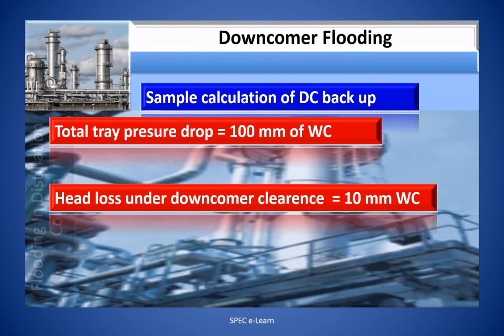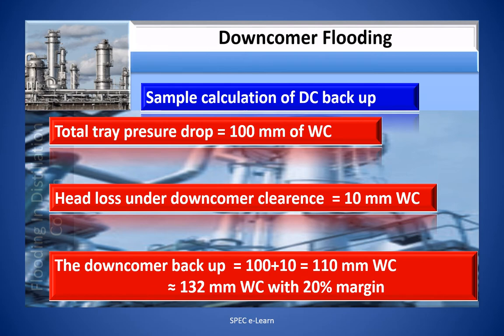Here is a sample calculation of a downcomer backup. Total tray pressure drop is 100 mm of water column. The head loss under downcomer clearance is 10 mm of water column. So the downcomer backup equals 100 + 10 = 110 mm of water column. Taking into account a 20% margin, the total backup works out to 132 mm of water column. This will be the backup height in the downcomer.